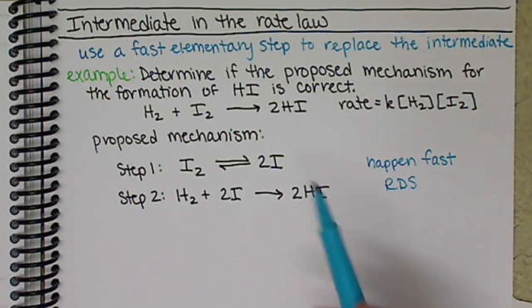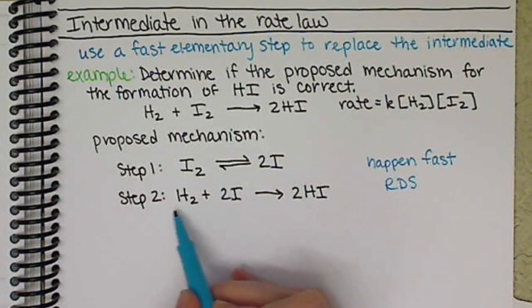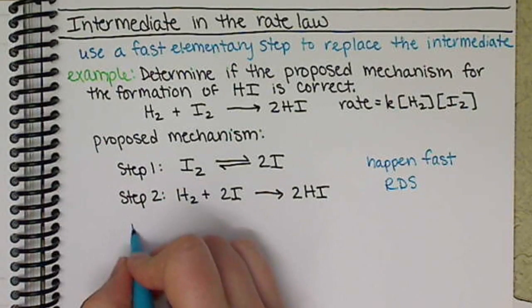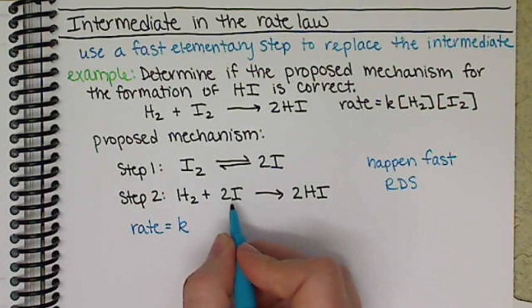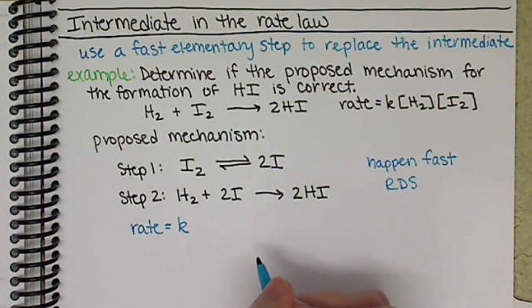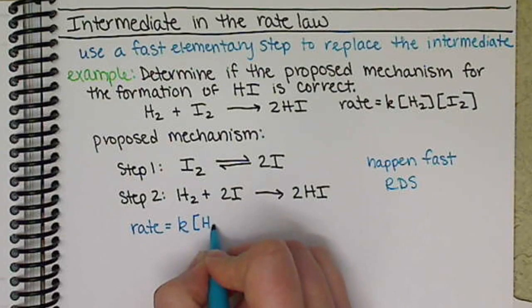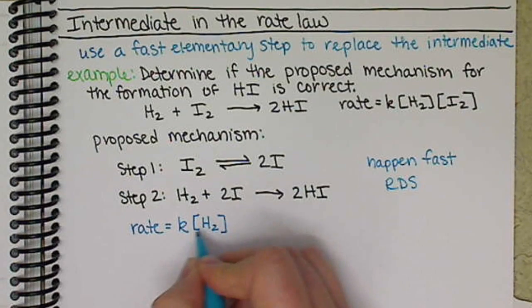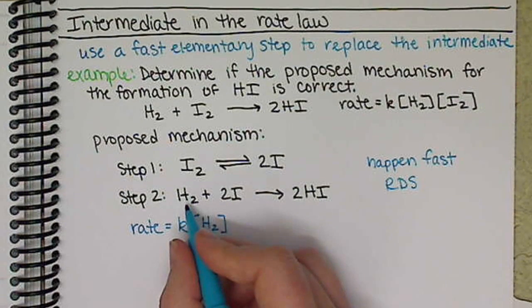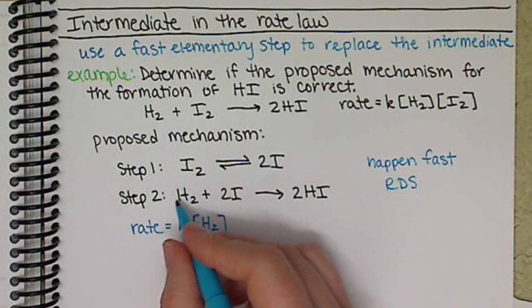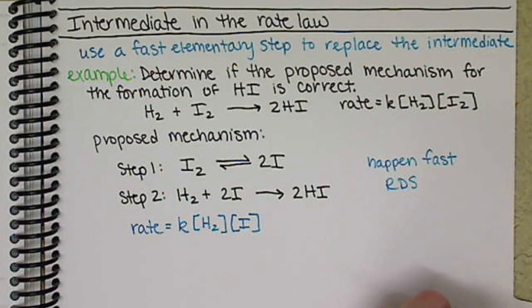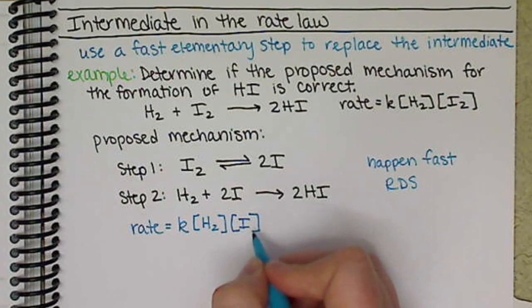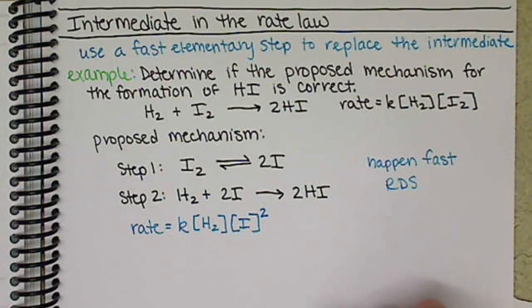To determine if this is a plausible mechanism, we take step two and write our rate law using the reactants and their coefficients as the exponents. We get rate constant K2 times the concentration of hydrogen — first order because it has a coefficient of one — then multiplied by the concentration of atomic iodine, which has a coefficient of two, so it is second order with respect to iodine.